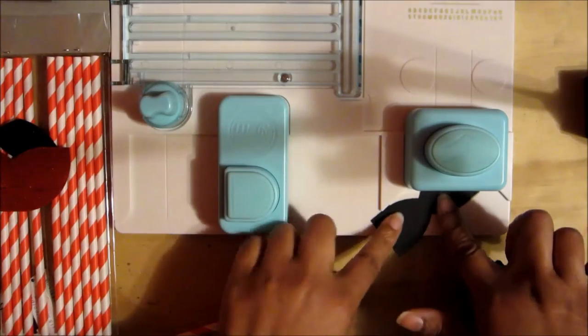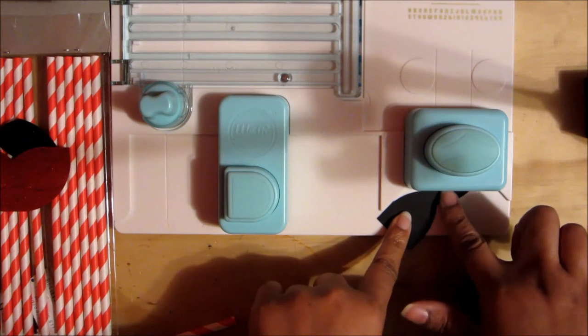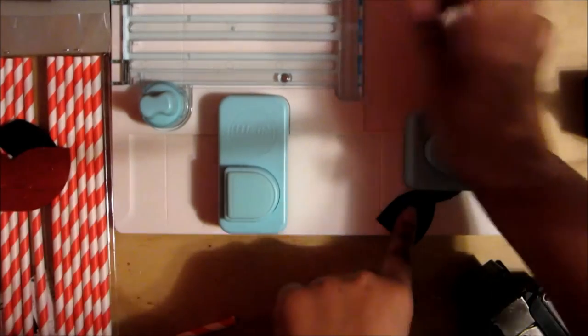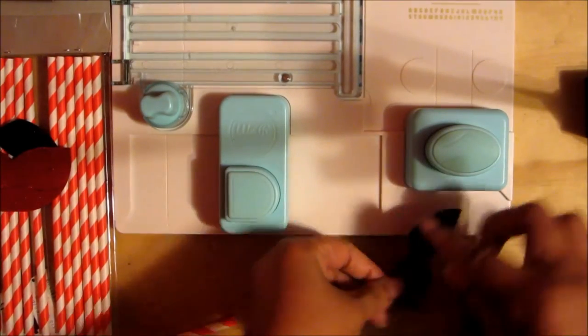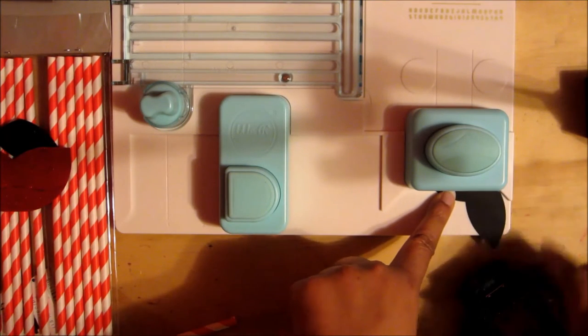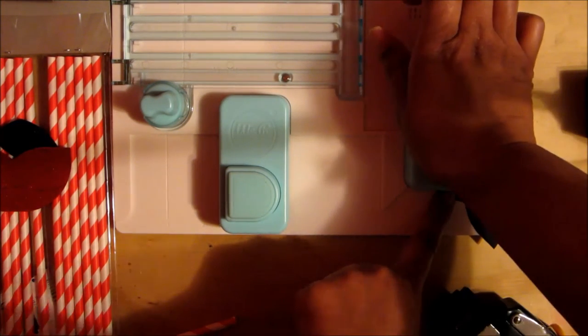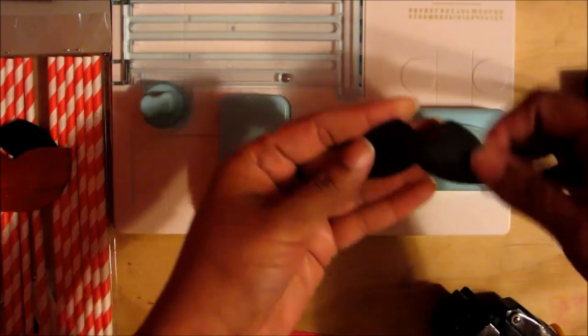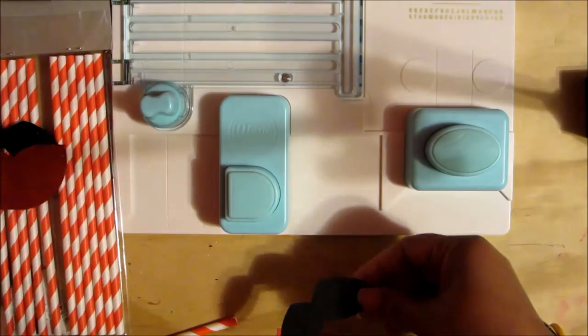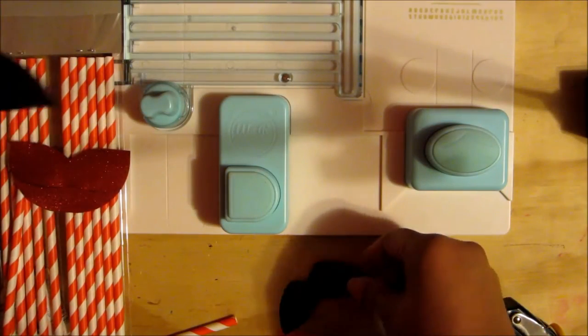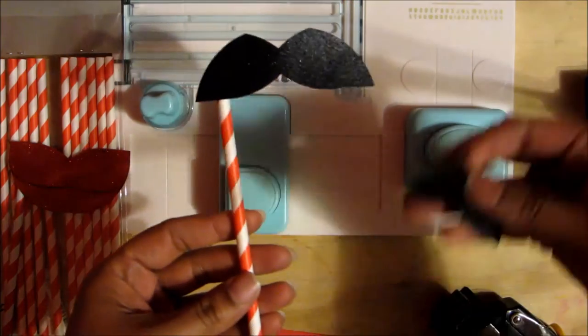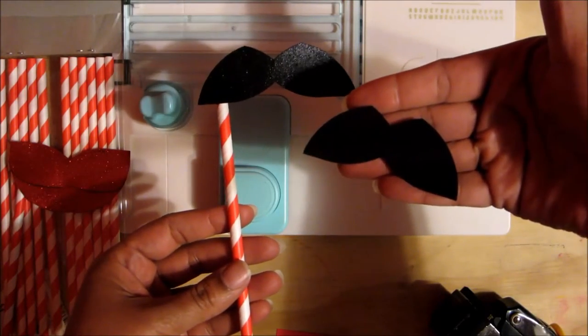Then you'll take the paper and slide it in at the bottom and give it the corner rounder effect. Then you will take that same paper, turn it on the other side and punch it again, and then you have your mustache. I'll show you how mine turned out with the craft straw.